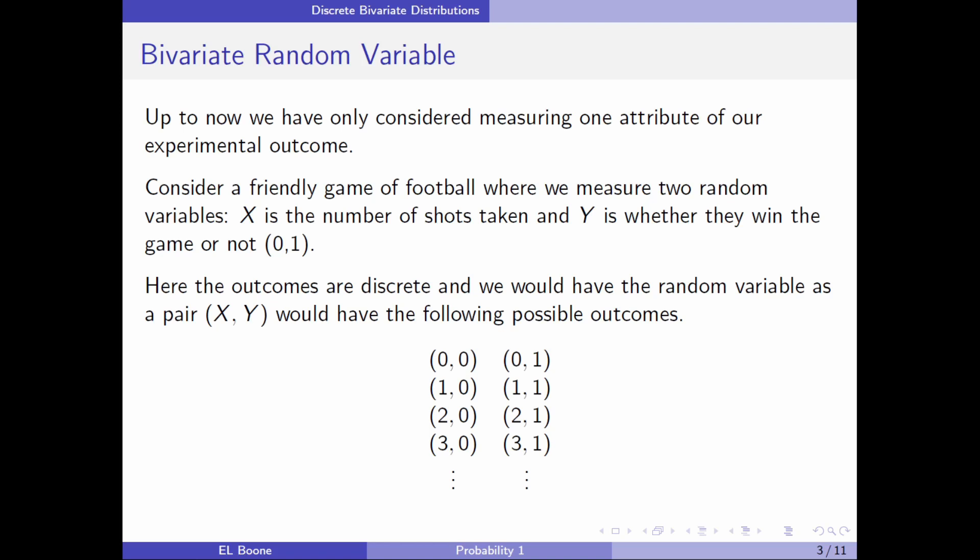Consider a friendly game of football where we measure two random variables. X is the number of shots taken, and Y is whether they win the game or not (0,1). Here the outcomes are discrete and we have the random variable as a pair (X, Y) with the following possible outcomes: (0,0) they take zero shots and lose, (0,1) they take zero shots but win because maybe the other team forfeits, (1,0) one shot and lose, (1,1) one shot and win, (2,0), (2,1), and so on. They're together because you want to look at how they're related to each other.